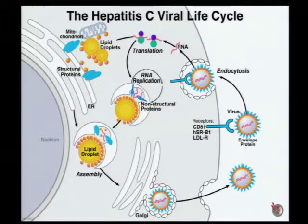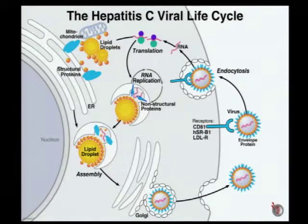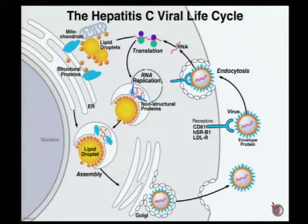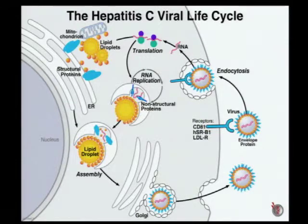Lipids also play a direct role in the Hepatitis C virus life cycle. These yellow blobs in the cytoplasm represent lipid droplets, which are the storage droplets of neutral lipids. It has emerged in the last three to four years that these lipid droplets are a major platform in the cytoplasm for viral assembly. Hepatitis C is a single positive strand RNA virus in the family of the flavivirus, similar to dengue, which we heard about this morning.